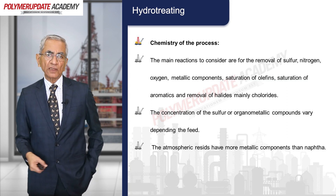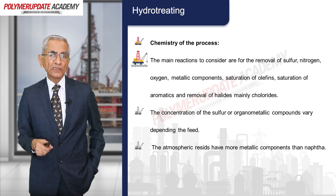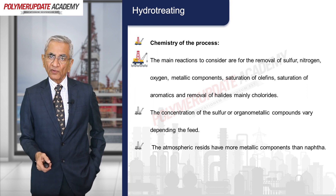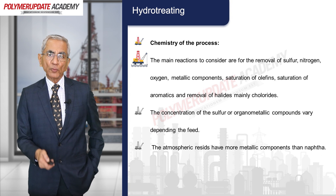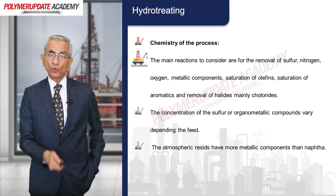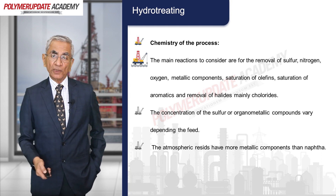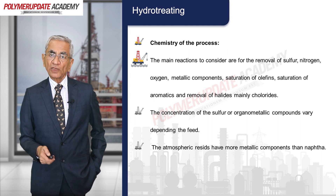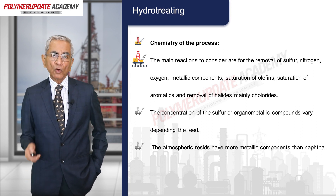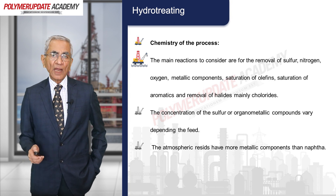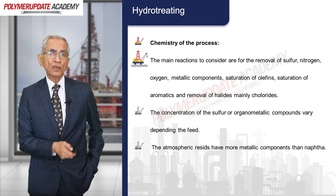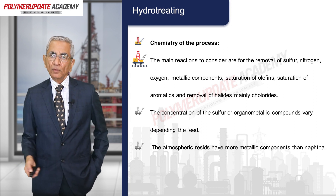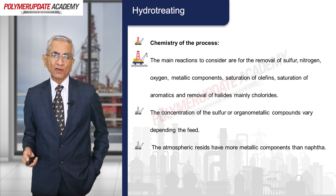What is the chemistry of hydrotreating? The main reactions are: removal of sulfur, nitrogen, oxygen, and some metallic components; saturation of olefins; saturation of aromatics; and removal of halides, mainly chlorides. Sulfur forms H₂S, nitrogen forms ammonia, oxygen forms water, and metallic components form metal compounds. Chlorides may also occasionally be present and need removal.